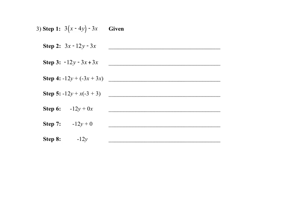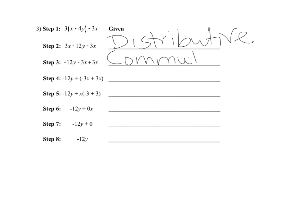Number three: going from step one to step two, the parentheses went away — what makes parentheses go away? Taking that outside number and distributing it in, we get 3x minus 12y. That's the distributive property. Now step two to step three: the order changes. What property is order? Commutative — and remember commutative has a 't' in it — so that's the commutative property of addition, because you're changing the order of the terms.